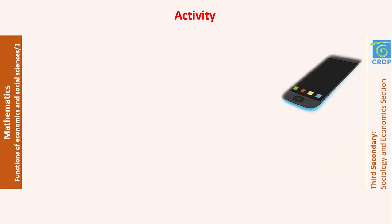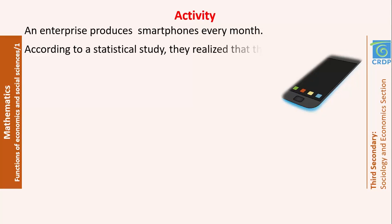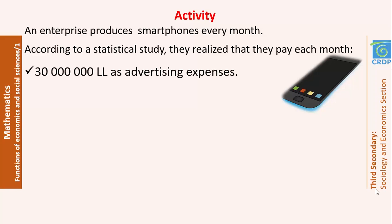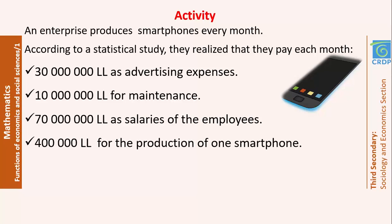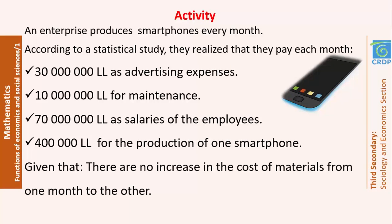Let's start with an activity. An enterprise produces smartphones every month. According to a statistical study, they realized that they pay each month the following expenses. Note that this last one depends on the number of produced smartphones while the other ones don't, and there is no increase in the cost of material from one month to the other.